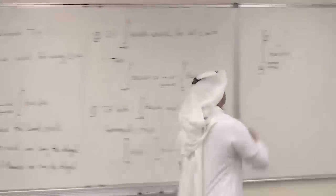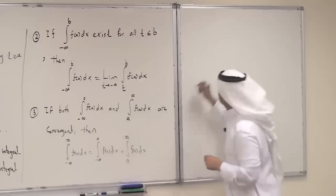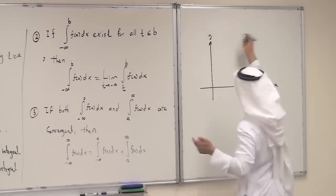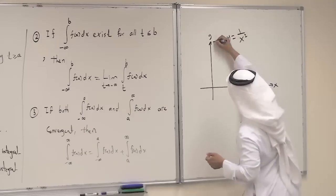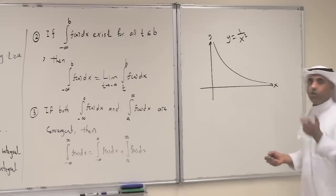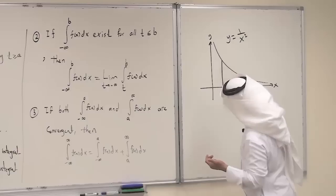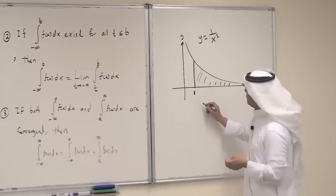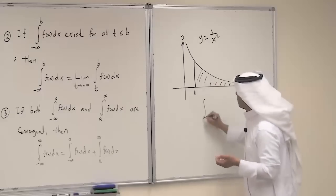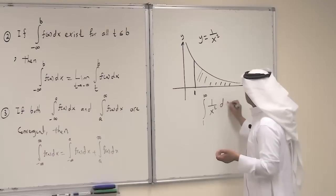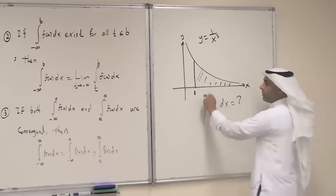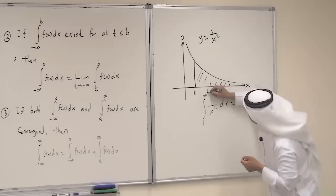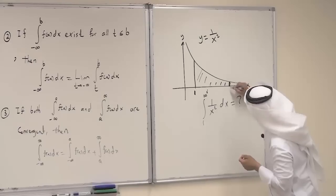Let me show you how to deal with infinity. Assume we have a function like y = 1/x or 1/x² in the xy-coordinate, coming downward. Assume someone is interested in finding the area between 1 and infinity — this area under the curve. The integral from 1 to infinity of 1/x² dx presents the problem of infinity. What we do is remove infinity and stop at a point t, a variable. Instead of integrating from 1 to infinity, we integrate from 1 to t, which is possible, and get an answer A(t) in terms of t.